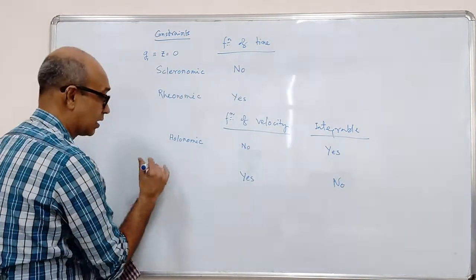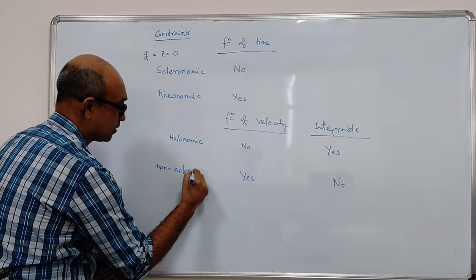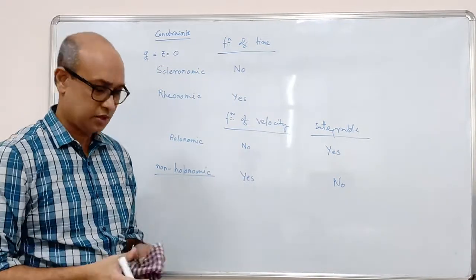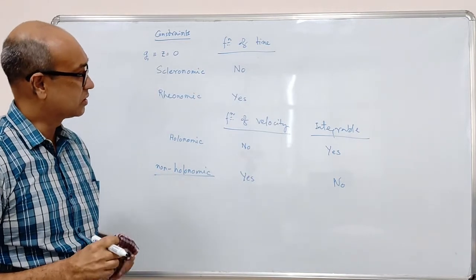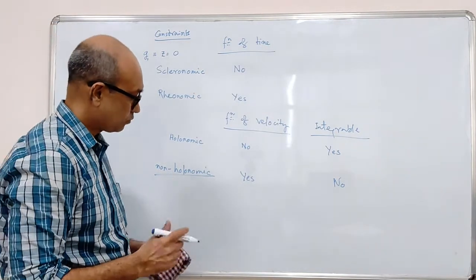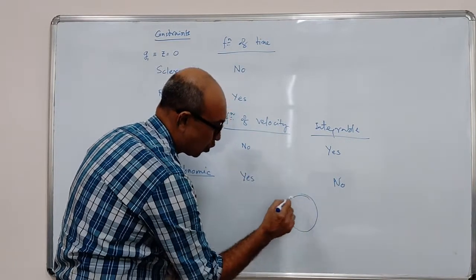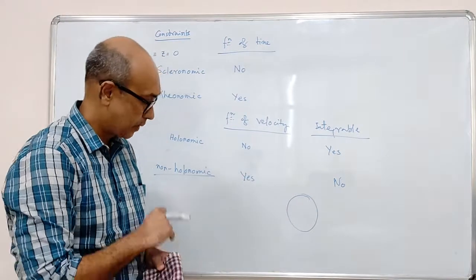In this case, the nomenclature is simple. No new word. It's just non-holonomic. It's not holonomic. An example of non-holonomic constraint is suppose you have a rolling disc, rolling without slipping.